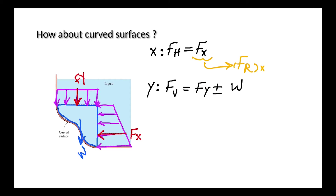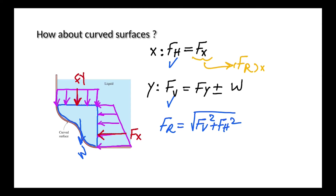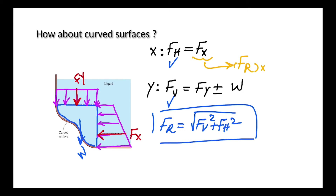We have Fv and Fh, then Fr is equal to the square root of Fv squared plus Fh squared. This is much easier than analyzing the curved surface directly.